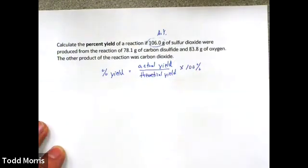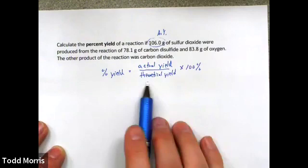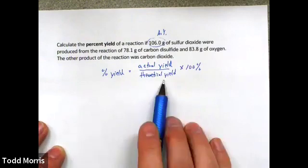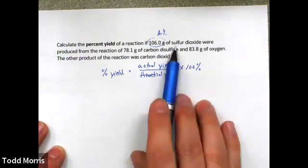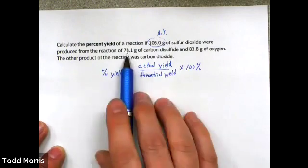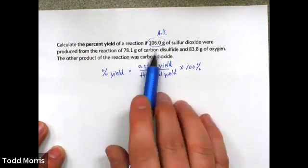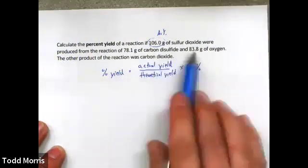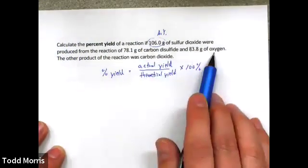Our task is to take the information in the problem and calculate the theoretical yield — how much sulfur dioxide should we have been able to produce from the reaction of 78.1 grams of carbon disulfide and 83.8 grams of oxygen?